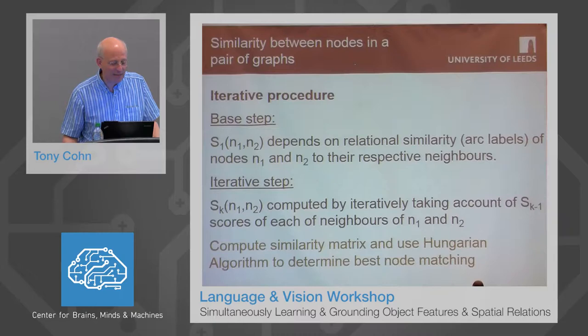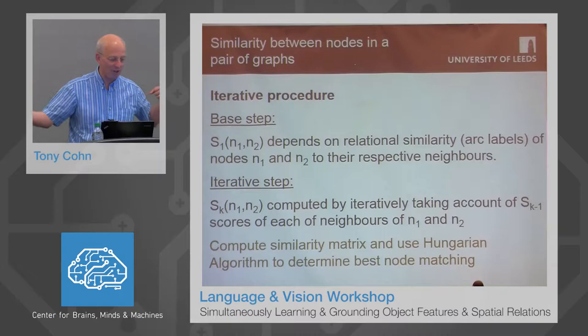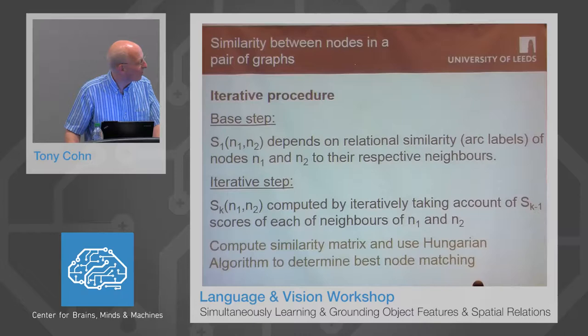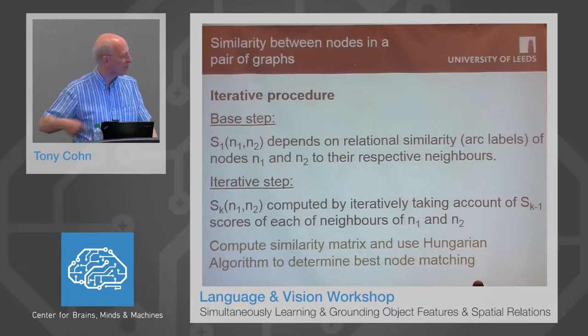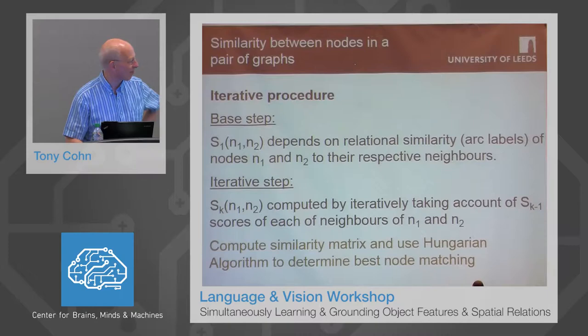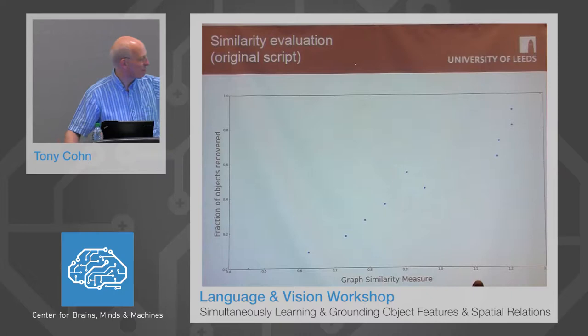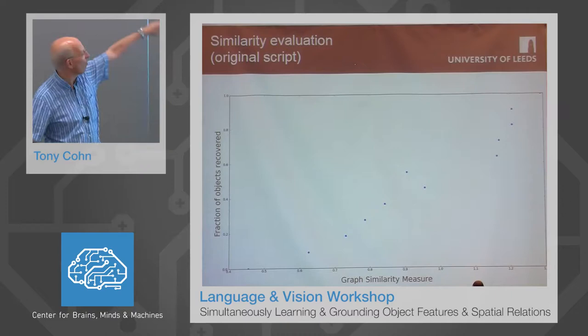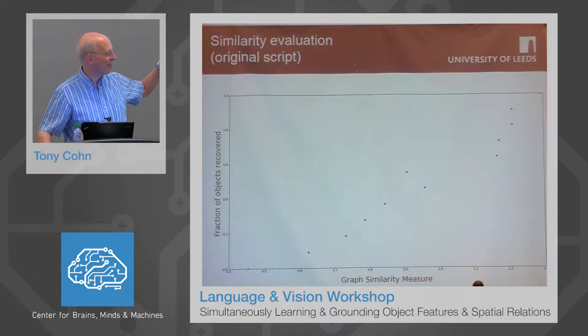The question is: can we match the graph extracted from the text to the graph extracted from vision, and use that to ground the words on the left to the objects on the right? We have a similarity metric where we first match individual nodes — one node in the left graph with one node on the right — based on the similarity of the arcs coming out of each node. We then iteratively do that taking account of the similarities of the neighbours and neighbours of neighbours, until we get a complete similarity matrix, and then use the Hungarian algorithm to determine the best node matching.